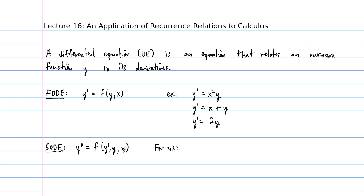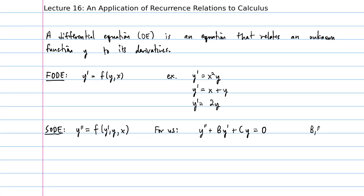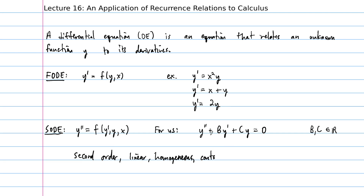At some point in your mathematical life you will study general second order differential equations. For us, we're just going to study the case when the equation can be written as: Y double prime plus B times Y prime plus C times Y equals 0. These two parameters B and C are going to be real numbers. This kind of equation is called a second order linear homogeneous constant coefficient equation. The homogeneous part refers to the 0, and the constant coefficients are B and C.